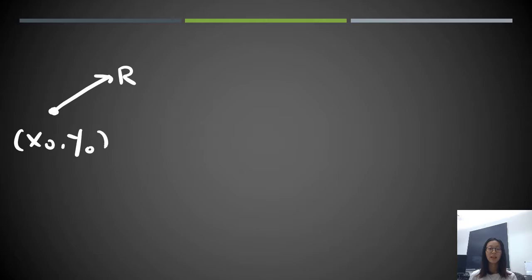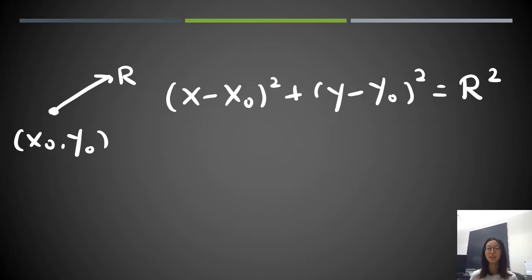As we all know, if we have a circle centered at x0, y0 with radius r, then its equation on the xy plane is (x-x0)² + (y-y0)² = r², where x, x0, y, y0, and r are normally real numbers.